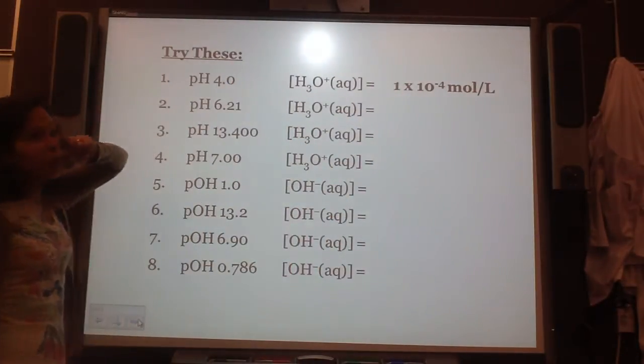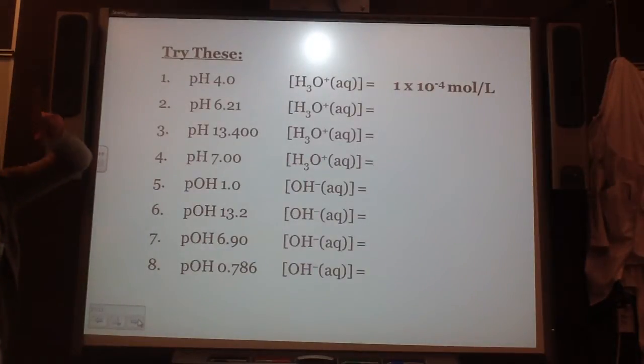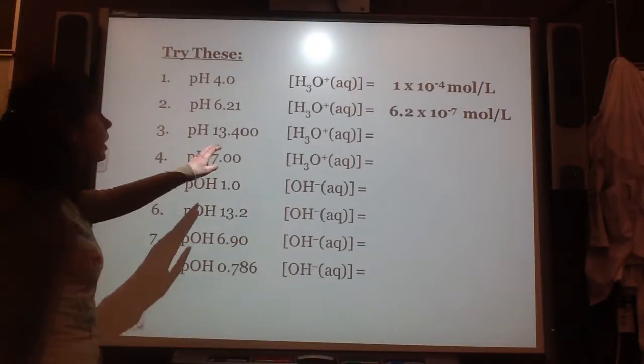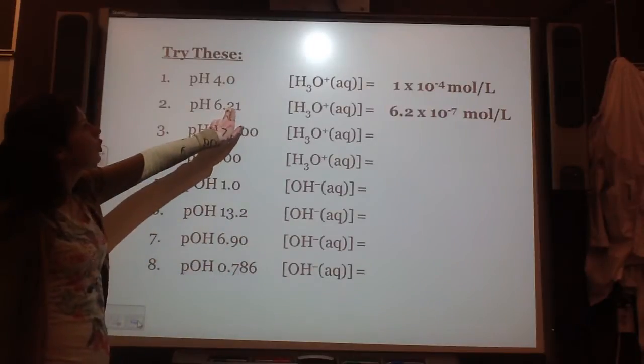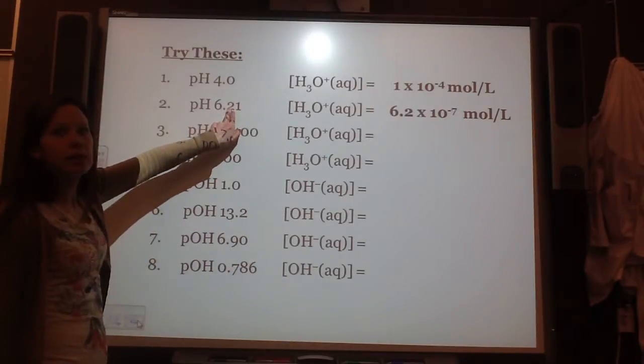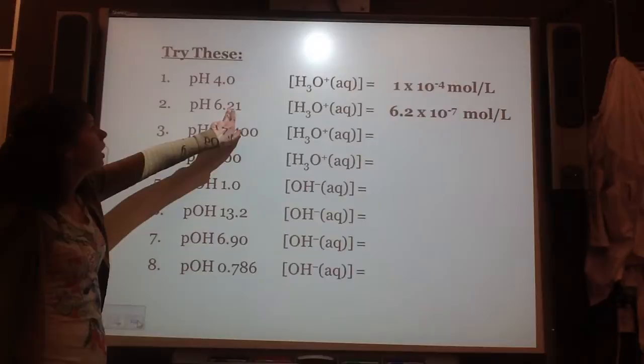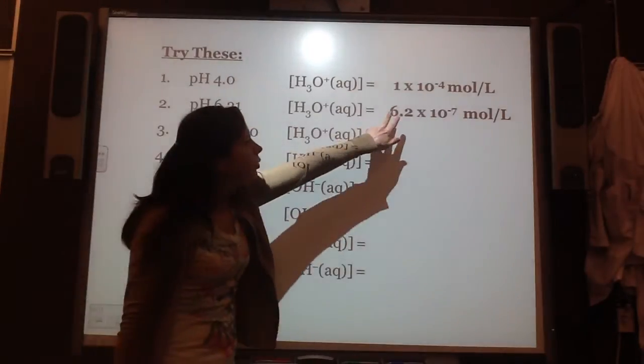So remember, pH and pOH, the sig digs are behind the decimal place. Everything else is normal. So next go 10 to the power of negative 6.21. You get like 6.165, etc. So you round that to 6.2 times 10 to the negative 7 because there's two decimal places after 6. And so you have two sig digs here.